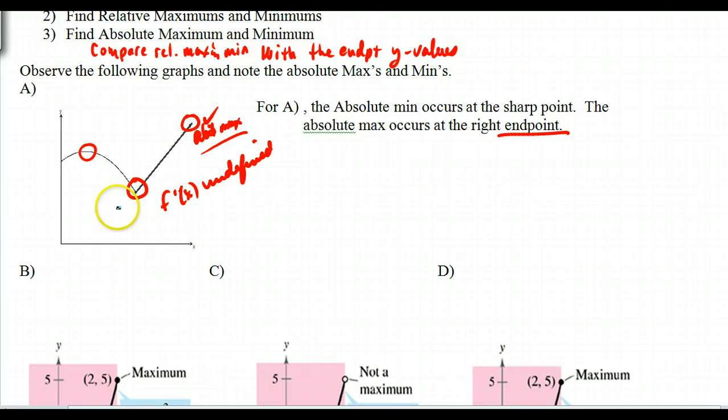And so this is the absolute minimum here. Okay, so it's going to be your lowest value all together. Now if I have the same picture except for now I have this, what happens here? Well here, and pretend these values are lower than this one here, this one does not have an absolute minimum.